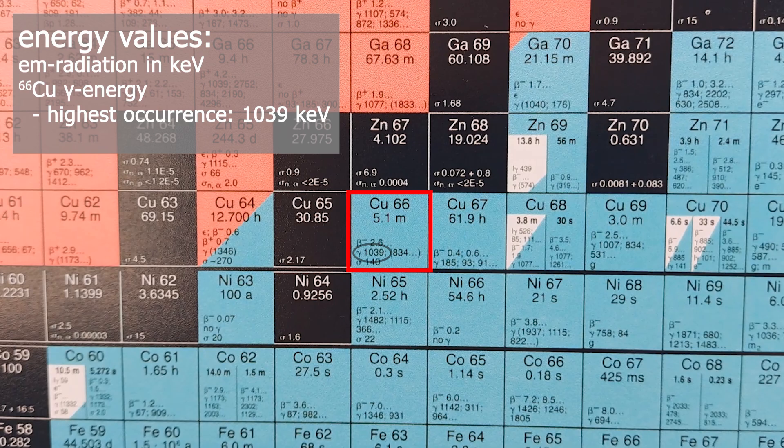If multiple numbers are given, they are listed in reading direction by decreasing probability of occurrence, not by their energy content. Here the 834 line is even in parentheses, meaning it occurs in less than 1% of all decays.